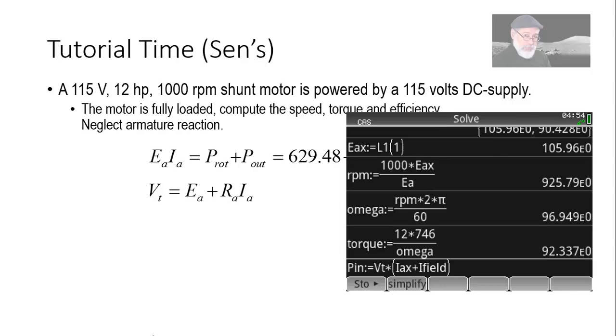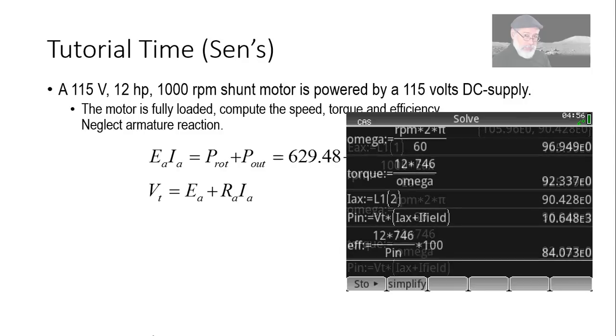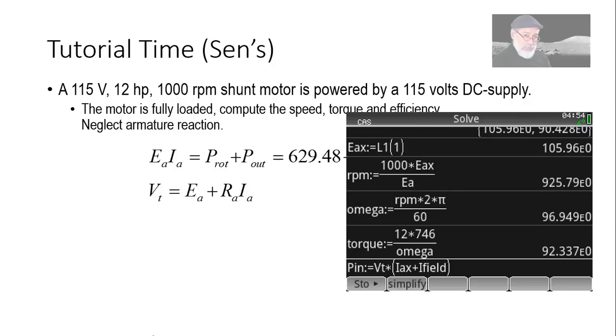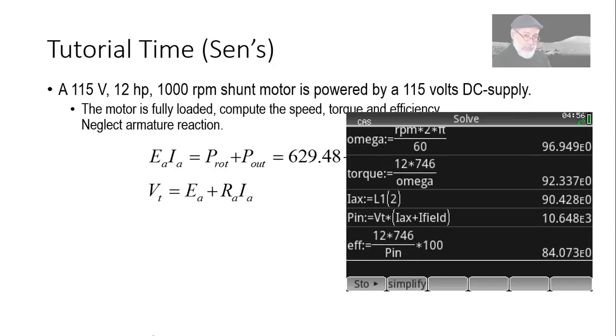What else? The efficiency. What is the input power? The input power is the voltage of the power supply multiplied by the total current, Iax plus Ifield. Ifield hasn't changed. And finally, we compute the efficiency, that is the output power divided by the input power, and multiply by 100, 84%. And there's that.